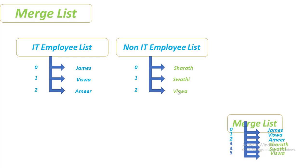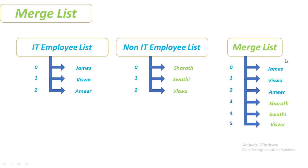How will it look? The data is going to be merged and displayed as the first list along with the second list merged together as one output. If I merge list two (non-IT employee list) with list one (IT employee list), I will get the output as James, Vishwa, Amir, Serat, Swati, and Vishwa.